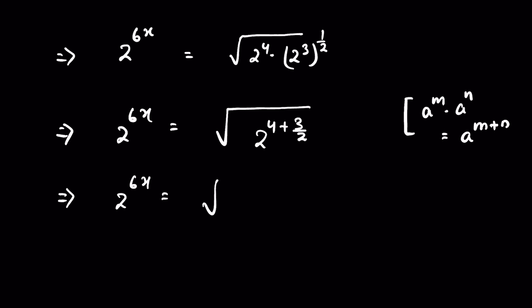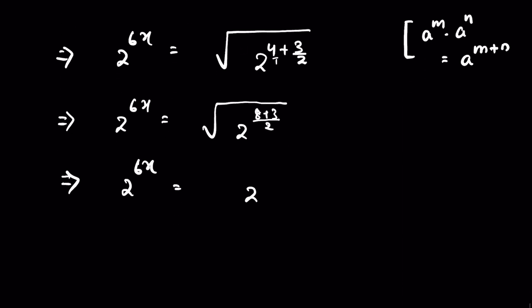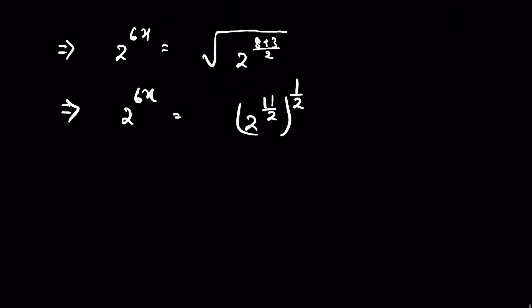So 2 raised to the power 6x is equal to 2 raised to the power 8 plus 3 upon 2. We take the LCM: 1 times 2 is 2, and 2 times 4 is 8, plus 3, upon 2. So 2 raised to the power 6x equals 2 raised to the power 11 upon 2, then whole raised to the power 1 upon 2, removing the square root.